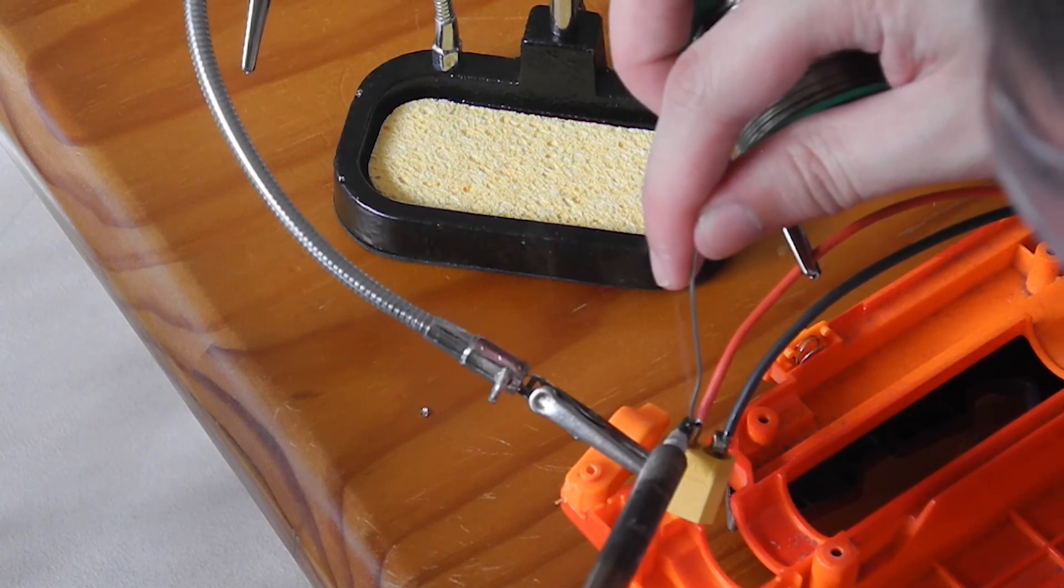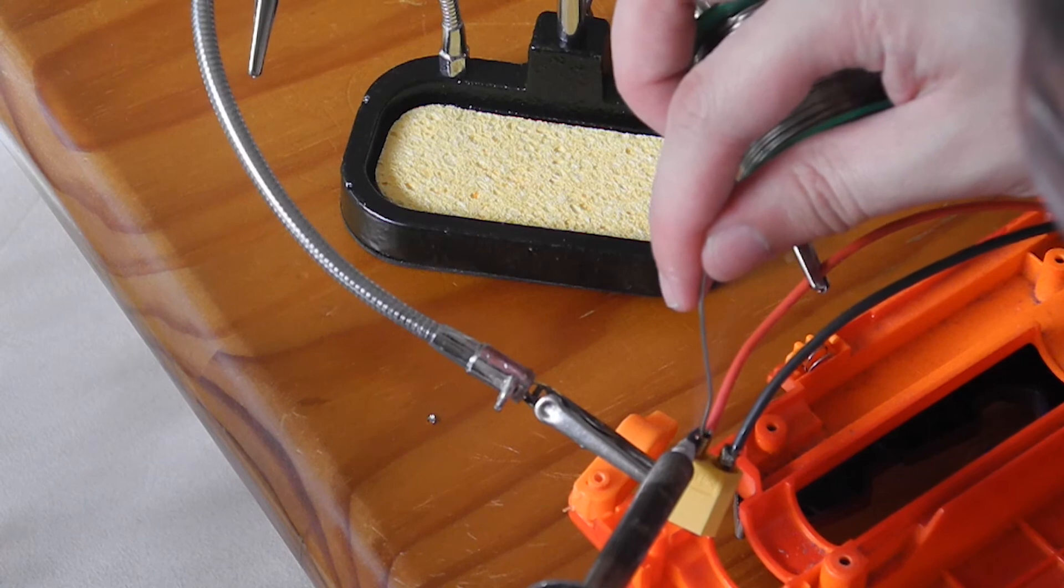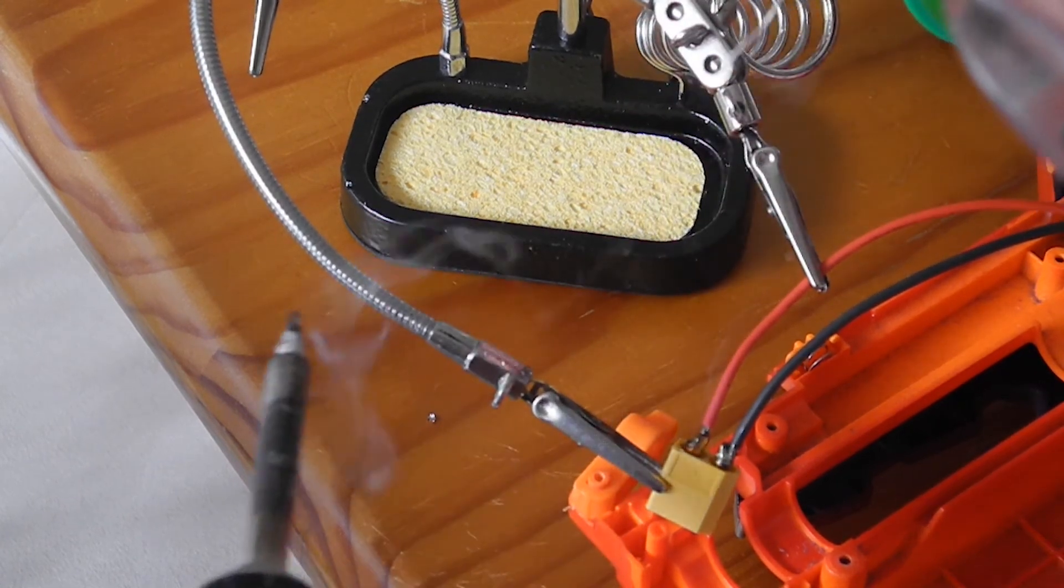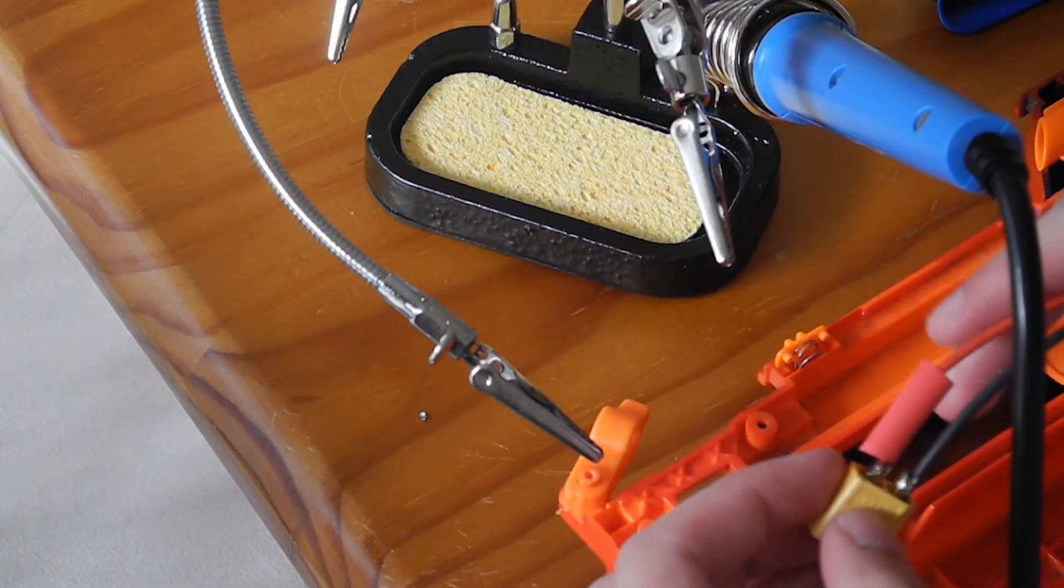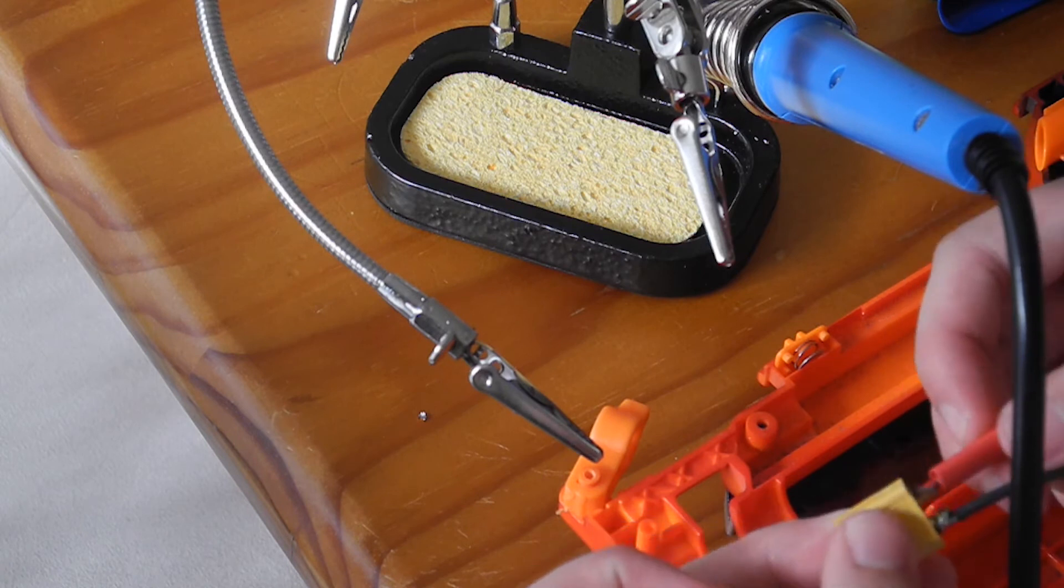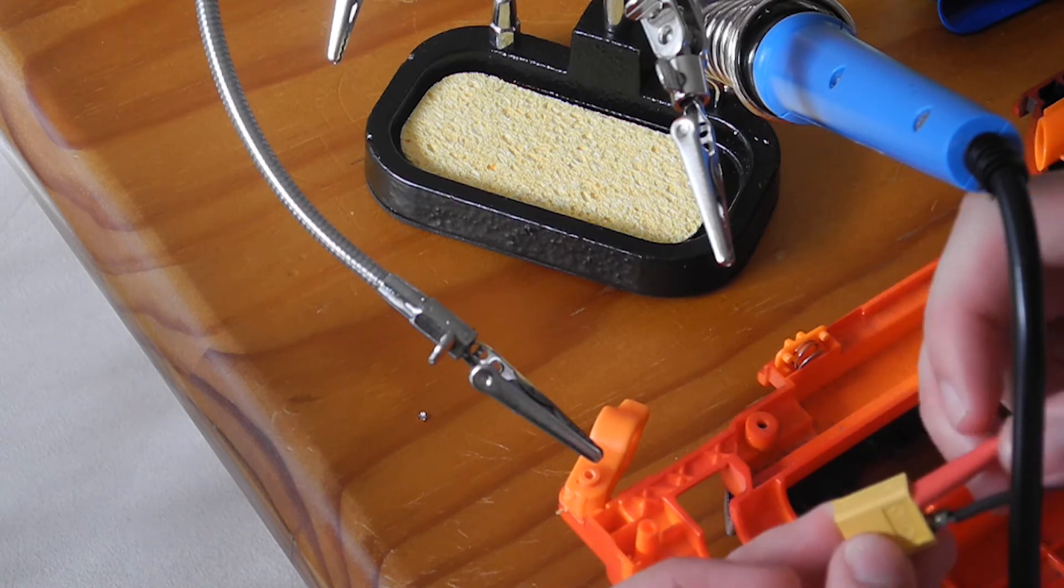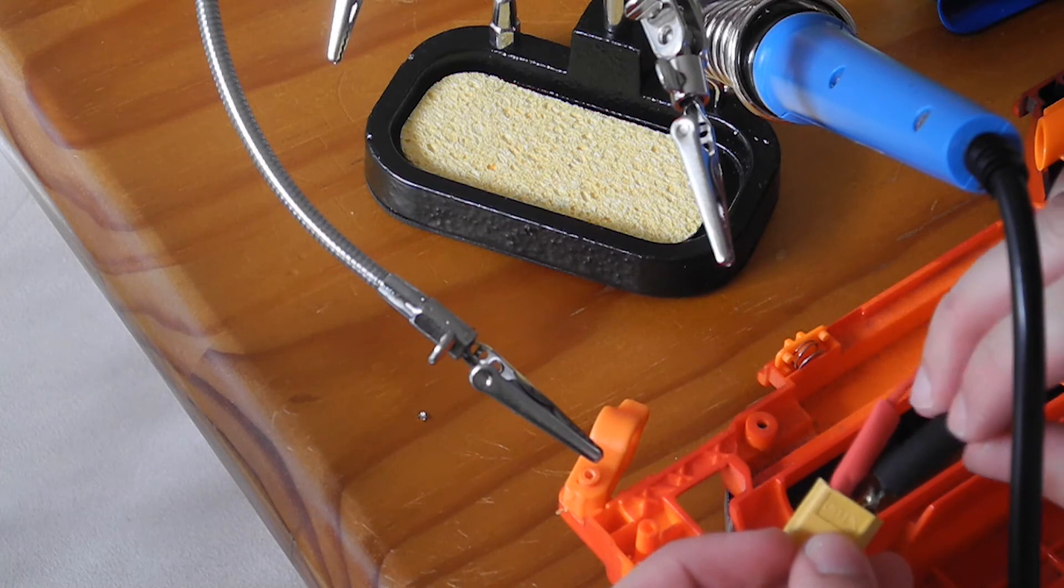On an XT60, the curved side is your negative and the straight side is your positive. Once cooled, slide the heat shrink back onto the soldered terminals and use a heat gun, lighter or the soldering iron to shrink it.